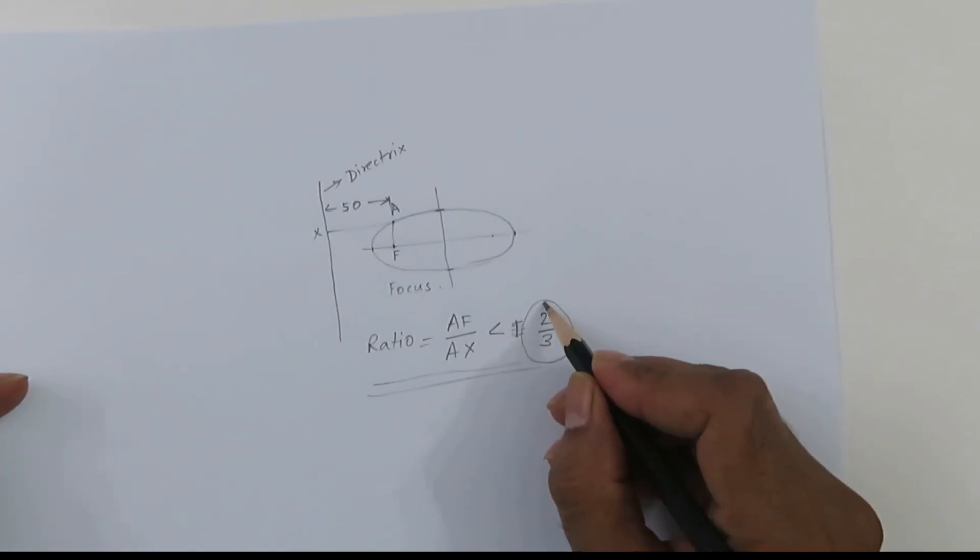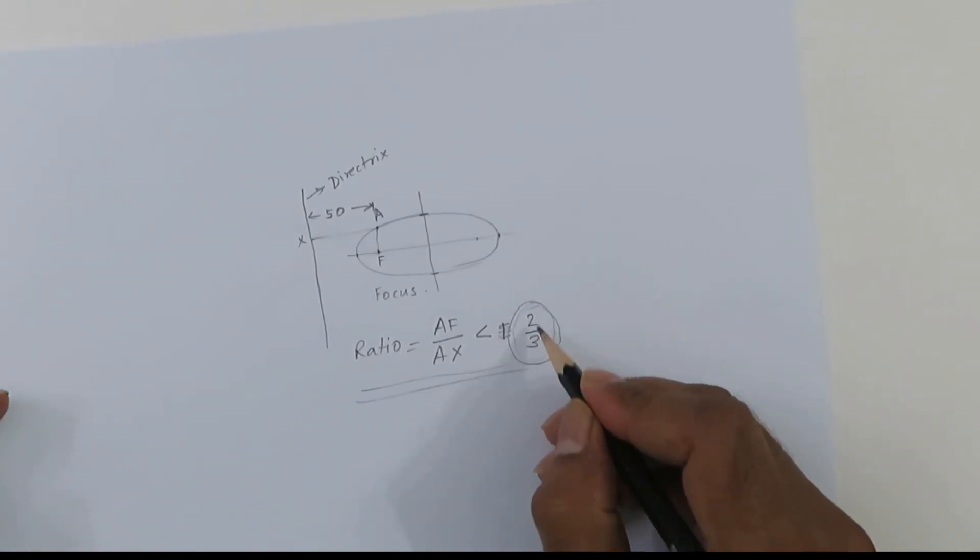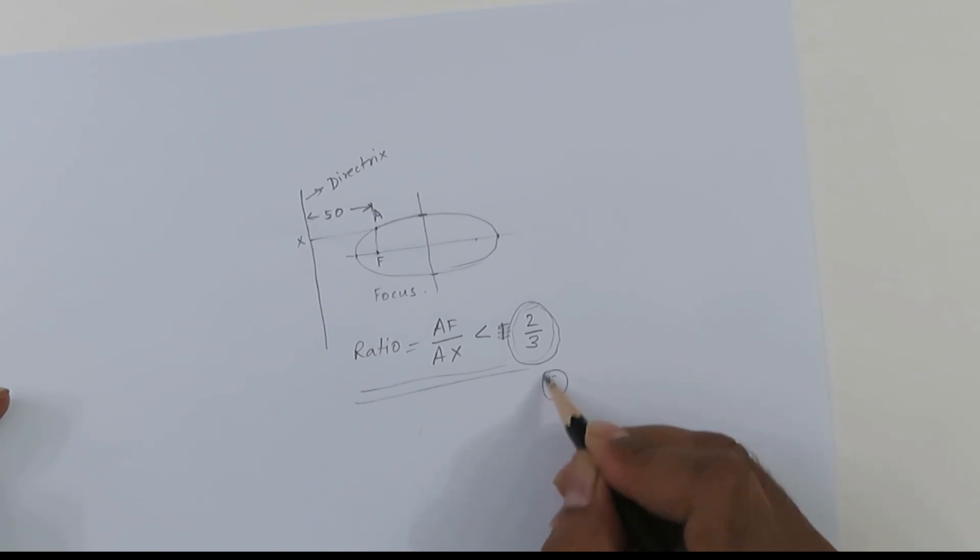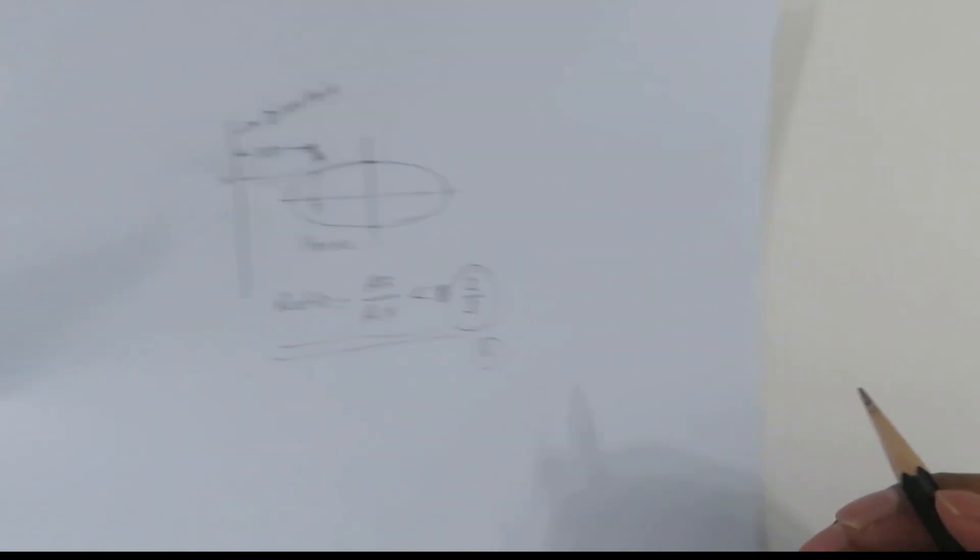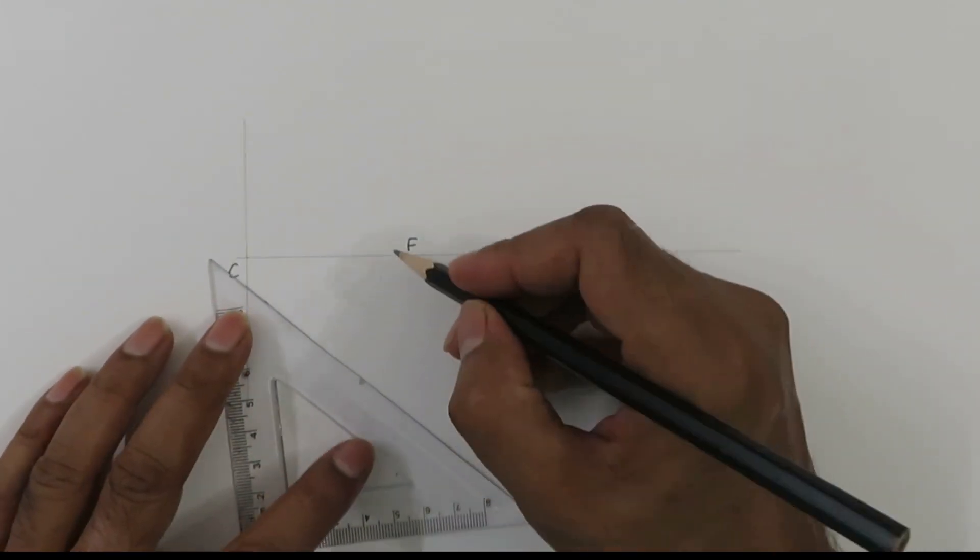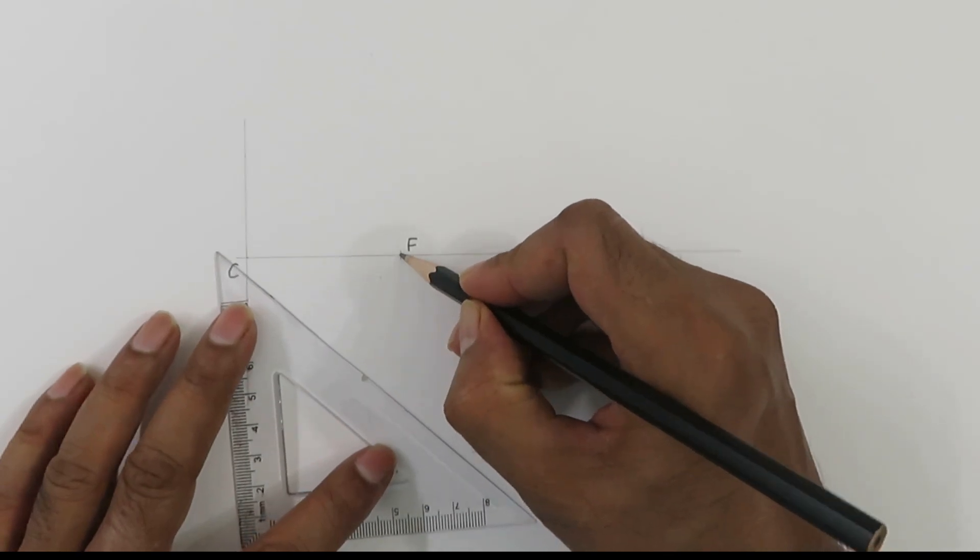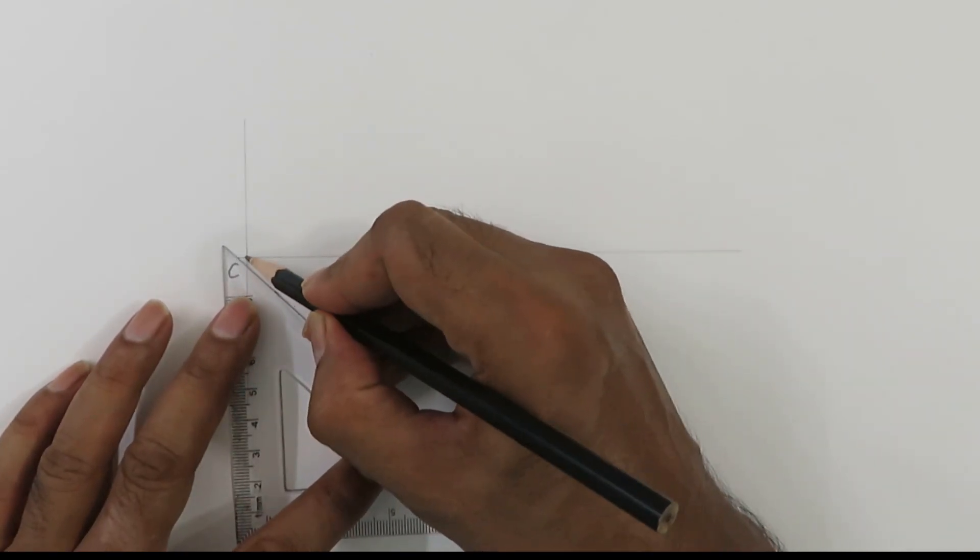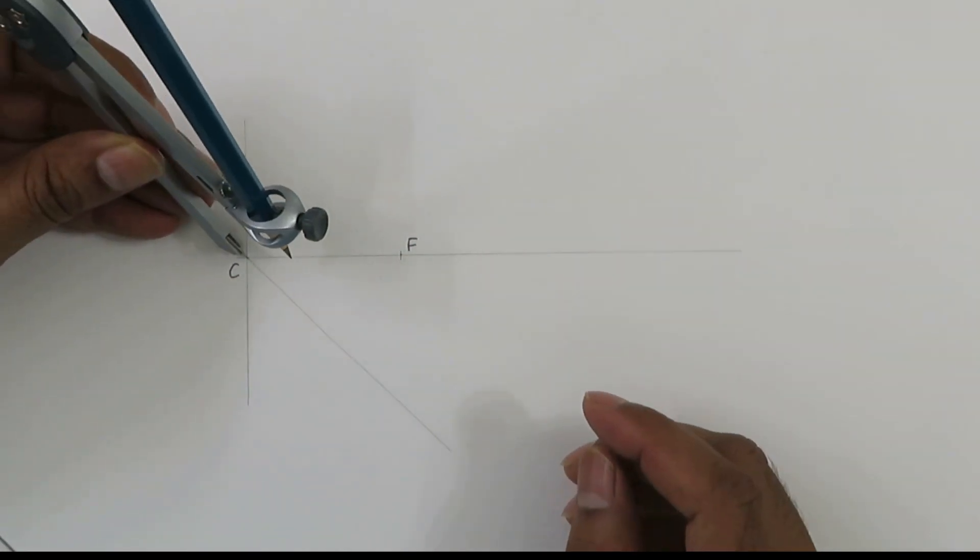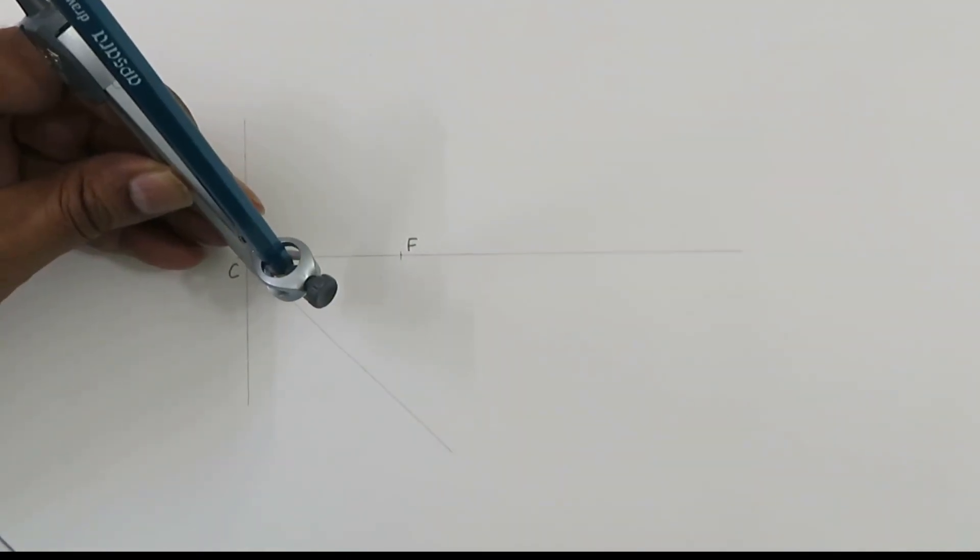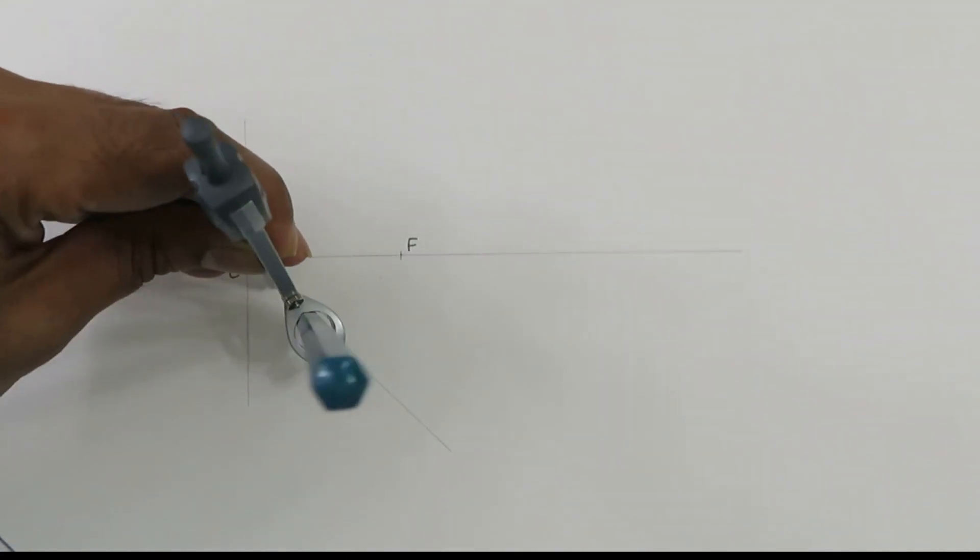Now since the ratio we have got 2 over 3, the sum of these two numbers is 5. We have to find out the sum of these two numbers and divide CF into 5 parts. As you know, for division of a straight line into any number of segments we can use this method.